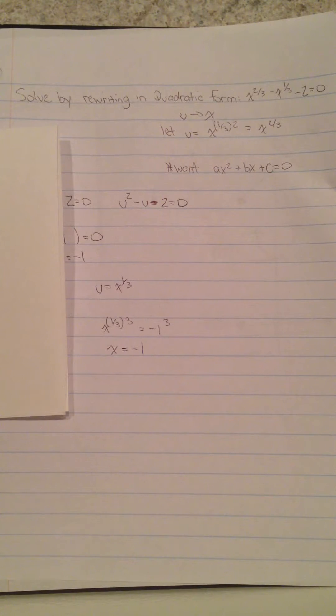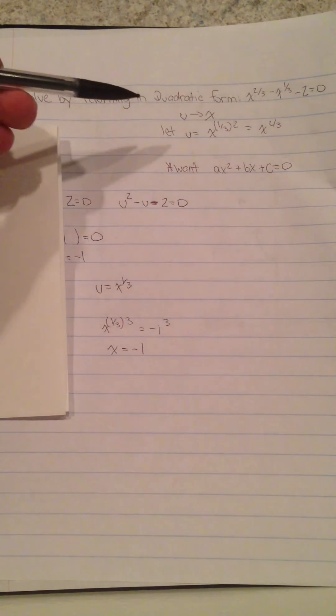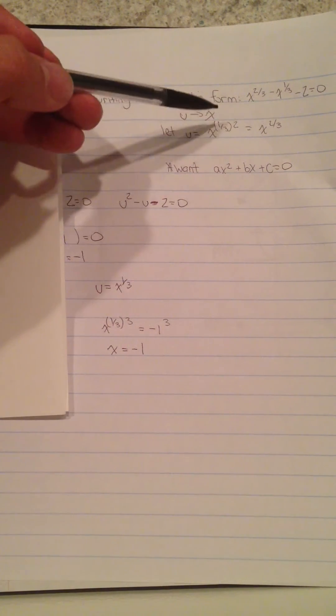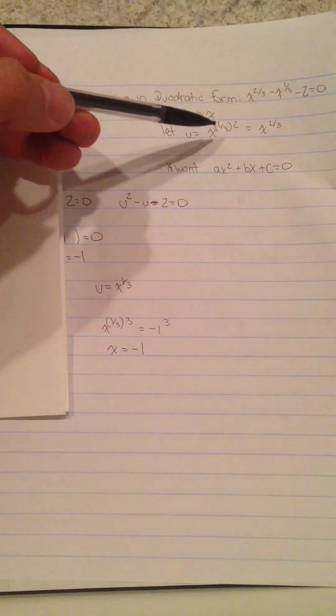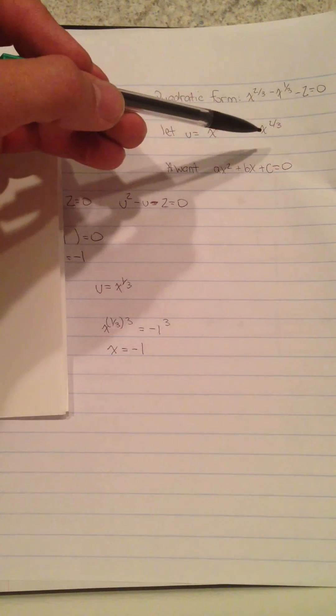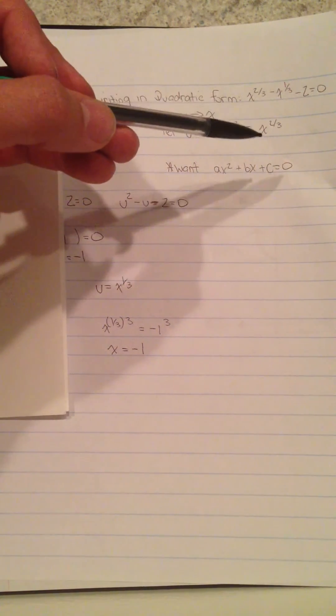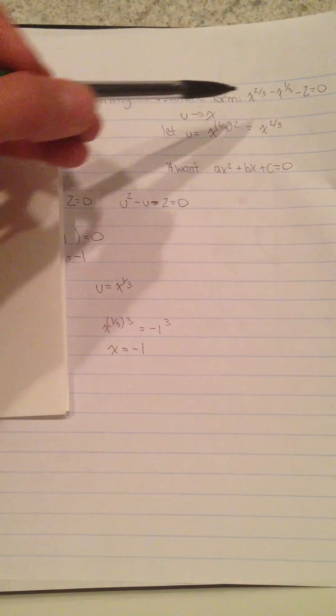So what we're going to do is let u be the expression for x. We'll let u = x^(1/3), and we raise that by two, you get x^(2/3), which is what we have up here.